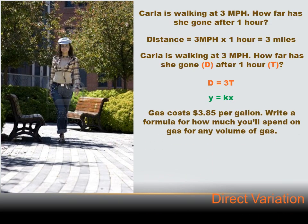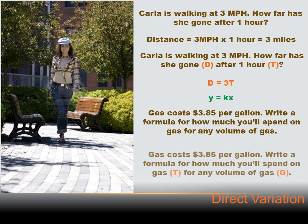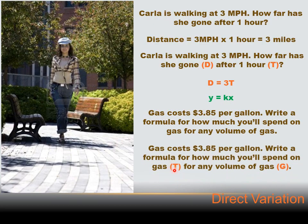Let's look at another example. Gas costs $3.85 per gallon. Write a formula for how much you'll spend on gas for any volume of gas. We're going to call T the total amount you're spending on gas, and G is going to be the gallons of gas that you buy. The formula is: the total amount you spend equals 3.85 times the number of gallons that you buy. You can see that expression is in that format — a variable equals a constant times another variable. So this is a direct variation.